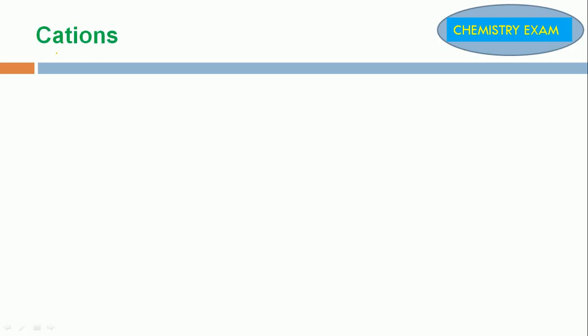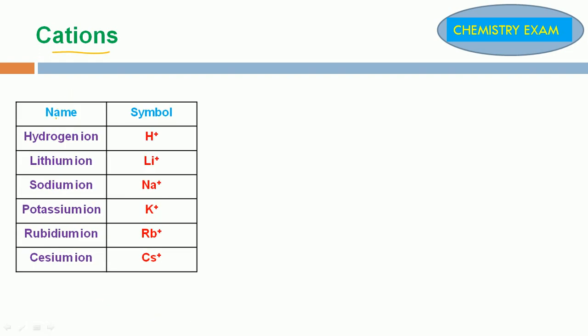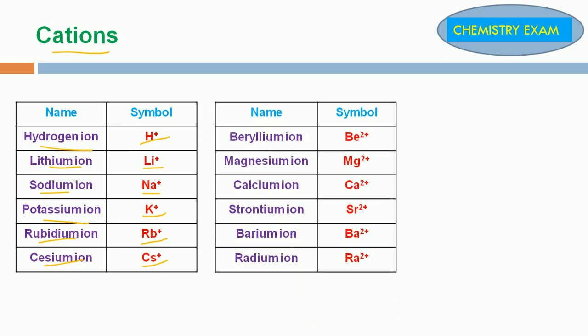First, we are going to discuss about cations. Name Symbol: Hydrogen ion H+, Lithium ion Li+, Sodium ion Na+, Potassium ion K+, Rubidium ion Rb+, Cesium ion Cs+, Beryllium ion Be2+, Magnesium ion Mg2+, Calcium ion Ca2+, Strontium ion Sr2+, Barium ion Ba2+, Radium ion Ra2+.